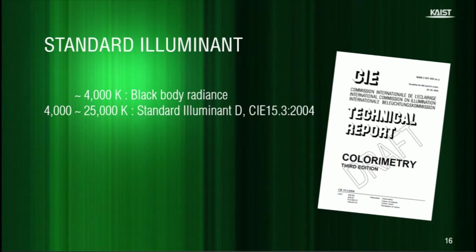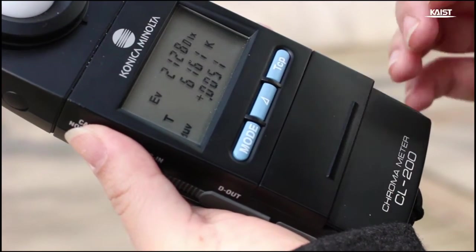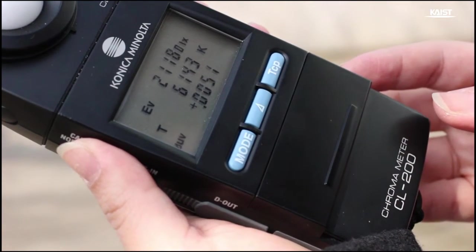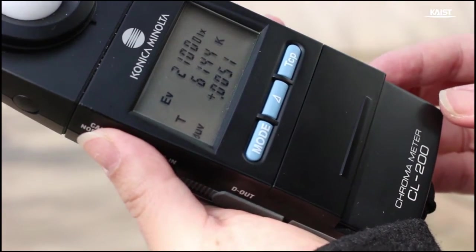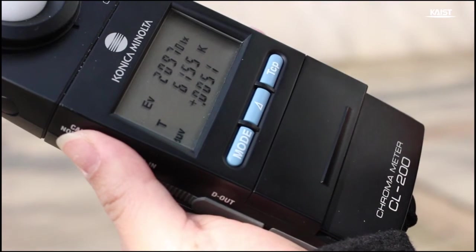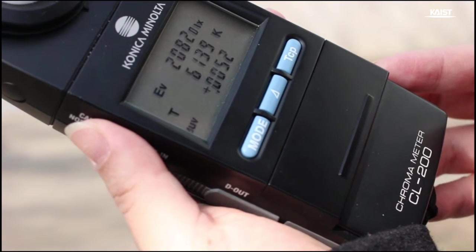Now let me show you how we use this standard illuminant. I'm in front of the building of the Department of Industrial Design. Let's check the correlated color temperature of this spot. My chroma meter reads the correlated temperature is approximately 6100 Kelvin and the illumination is about 2100 lux. And the distance from black body locus, which is UV value, is approximately 0.005.